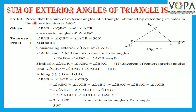Now, we will prove that the sum of exterior angles of a triangle obtained by extending its sides in the same direction is 360 degrees with the help of the figure.